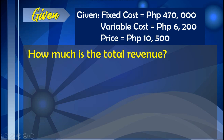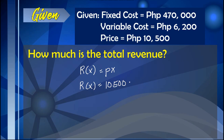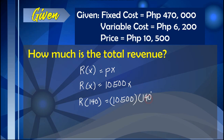The second question is: how much is the total revenue? The revenue function is R(x) = price × number of units, so R(x) = $10,500x. To find the total revenue for selling 140 sofa chairs in one month, we substitute 140 for x: R(140) = $10,500 × 140 = $1,470,000. This amount refers to the total revenue in selling 140 sofa chairs in one month.